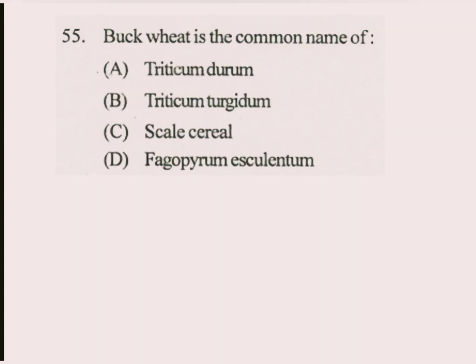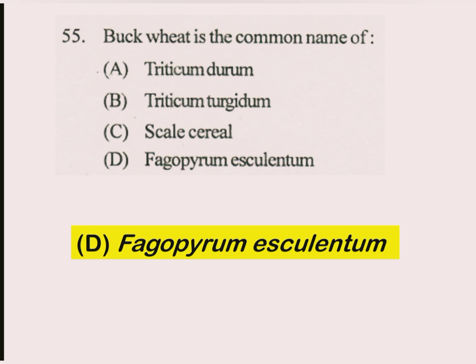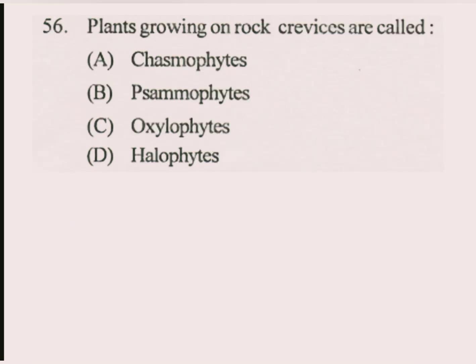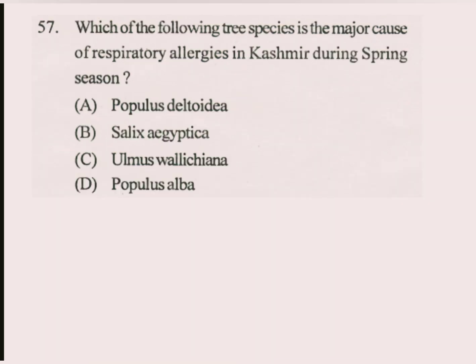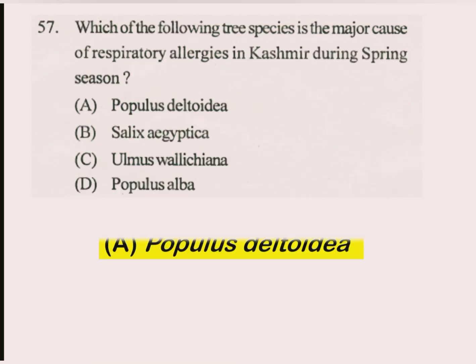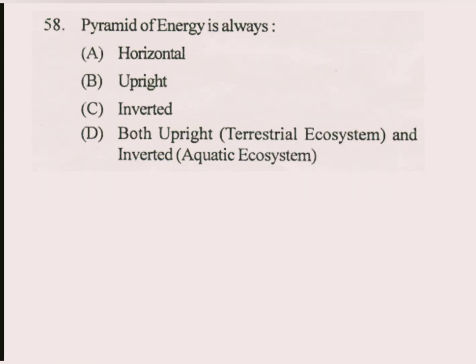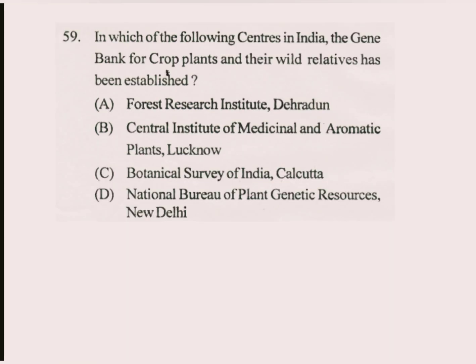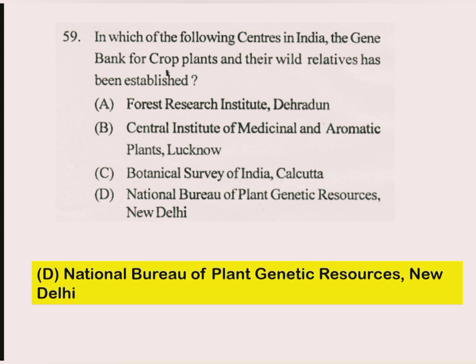Question number 55. Buckwheat is the common name of Fagopyrum esculentum. Question number 56. Plants growing on rocks or rock crevices are called chasmophytes. Question number 57. Which of the following tree species is the major cause of respiratory allergies in Kashmir during spring season? The answer is Populus deltoides. Question number 58. Energy pyramid is always upright. Question number 59. In which of the following centers in India has the gene bank for crop plants and their wild relatives been established? The answer is D part: National Bureau of Plant Genetic Resources, New Delhi — NBPGR.